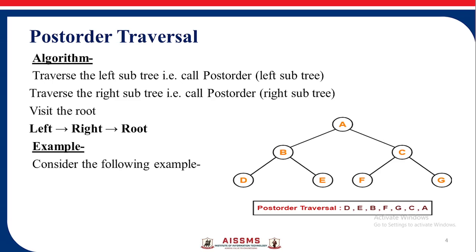The algorithm is: traverse the left subtree (post-order left subtree), traverse the right subtree (post-order right subtree), and then lastly visit the root. So it is Left, Right, Root.